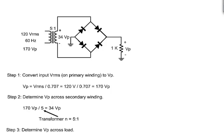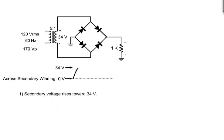Finally, we can now determine the peak voltage across the load. The voltage across the transformer's secondary winding begins rising toward 34 volts. If we use the constant voltage model for the diodes, they start conducting when the voltage reaches 1.4 volts,